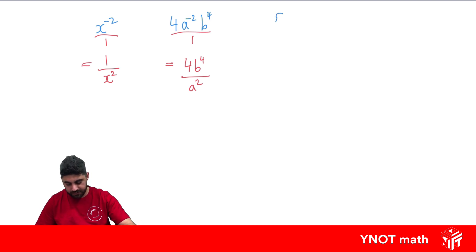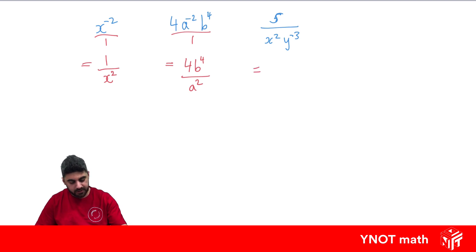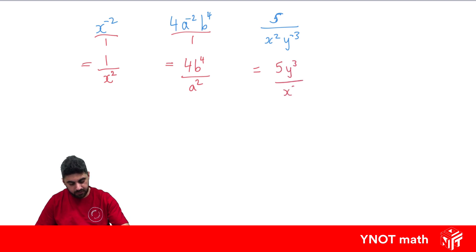What about 5 over (x² y to the minus 3)? This time we already have a fraction, and we have a negative power in the denominator, which means we can move it into the numerator and get rid of that negative power. So we end up with 5y cubed over x squared — the y to the minus 3 moved from the denominator into the numerator, becoming y cubed.